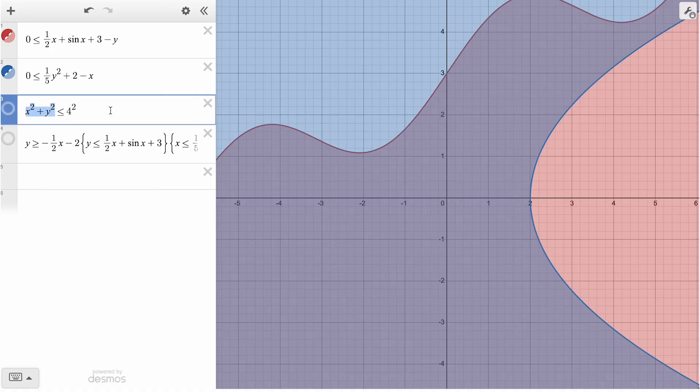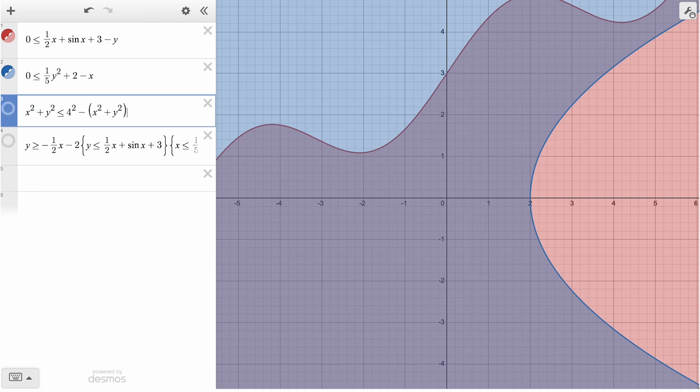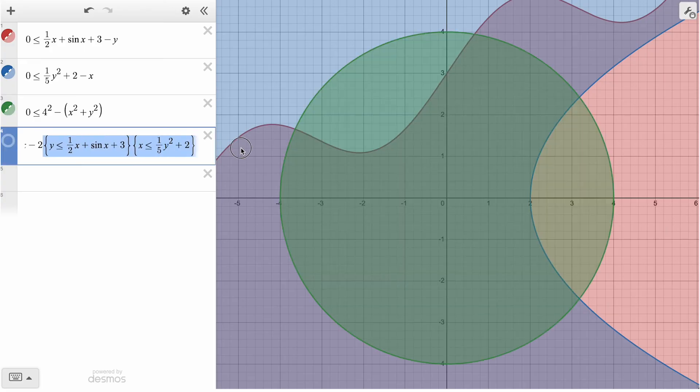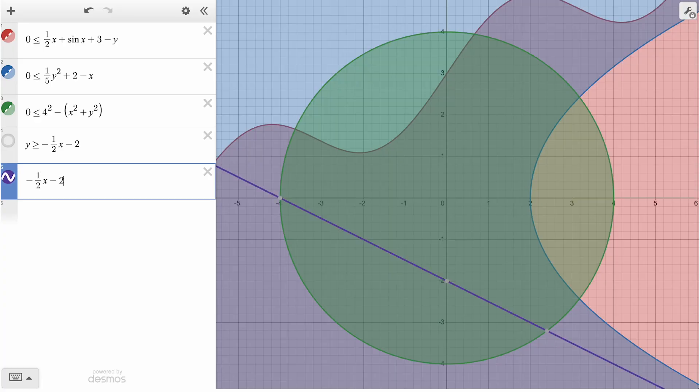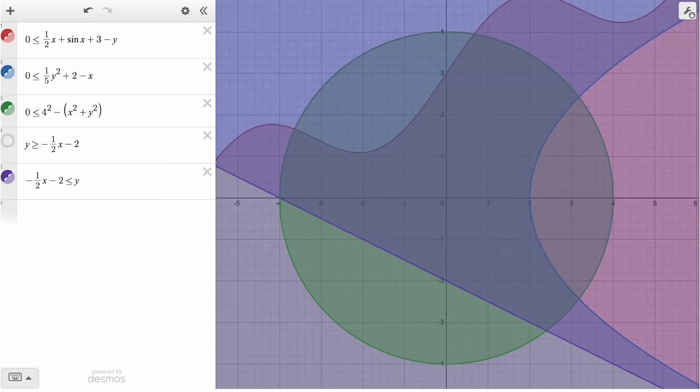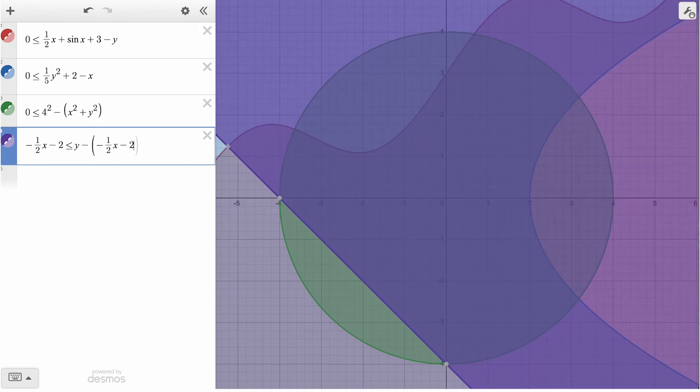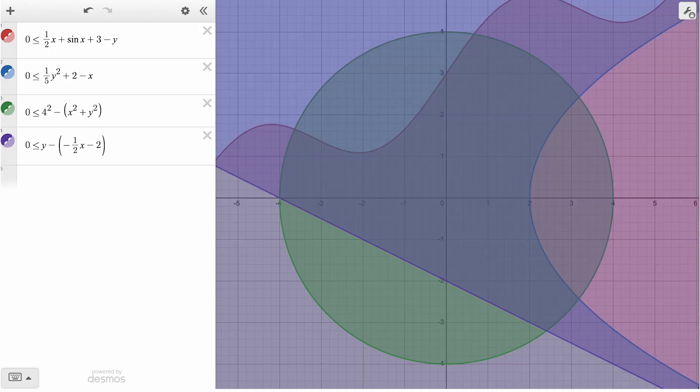When we come down to the circle equation, in order to keep zero on the left side, we can subtract the whole expression of x squared plus y squared from 4 squared. Now for the final line, notice how the inequality is currently greater than or equal to. We will first flip this around, rewriting our inequality as a less than or equal to, and then again subtract our expression of x from y to get 0 on the left side.